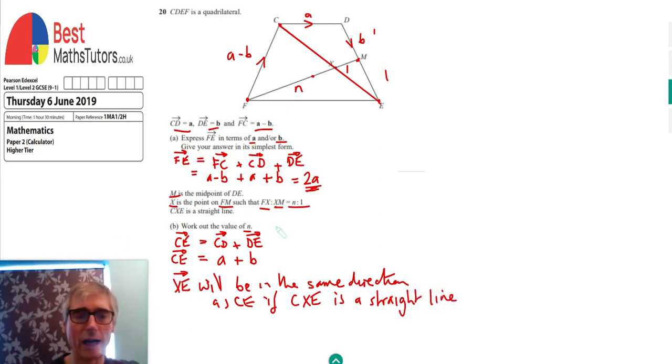As a consequence of that, the coefficients in front of the A and B will be in the same ratio. Currently, the coefficients in front of A and B are both 1. So they're equal. That means if XE is parallel to CE, then its coefficients must also be equal.